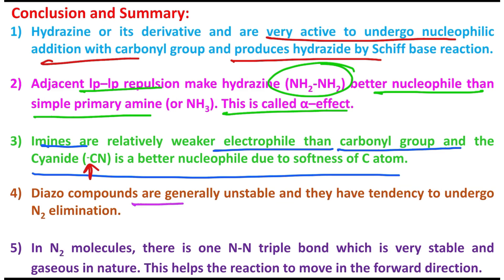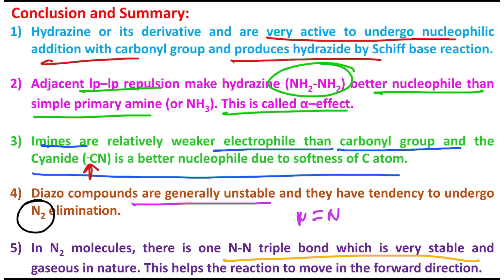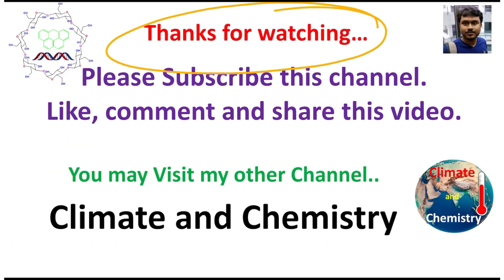Diazo compounds — the N=N double bond compounds — are generally unstable and they have a tendency to undergo elimination because N₂ has a very stable triple bond. In the N₂ molecule, as I mentioned, this strong bond is stable in gaseous form, and that helps the elimination of nitrogen — nitrogen comes out from the reaction mixture as a gas — which helps the reaction move in the forward direction.